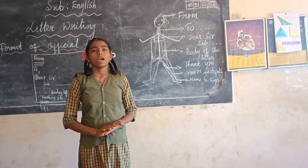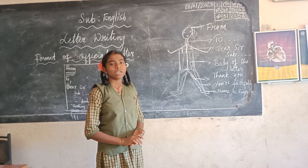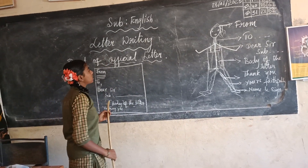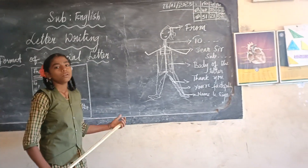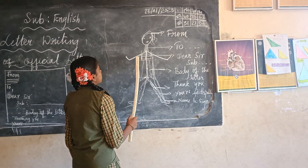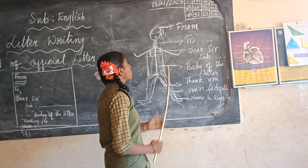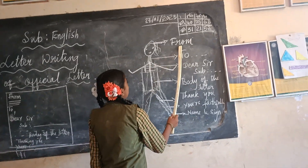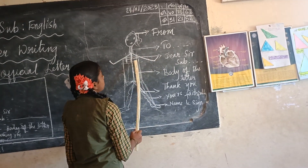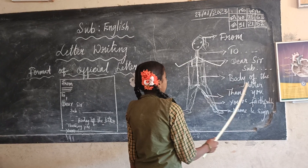Hi everyone, I am now going to tell about the format of an official letter through my body parts. Head is the from address, neck is the to address, chest is the salutation and subject, stomach is the body of the letter.